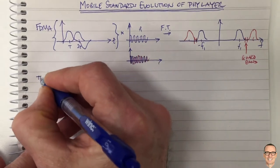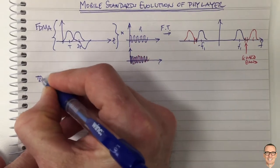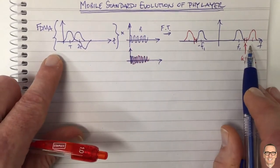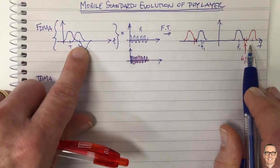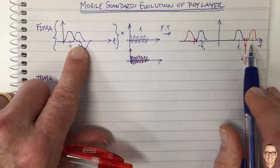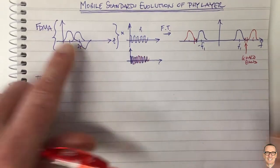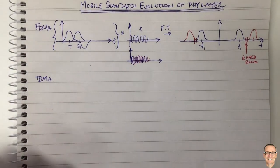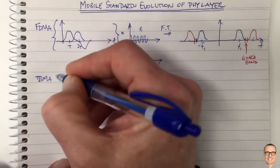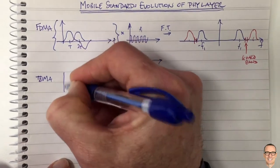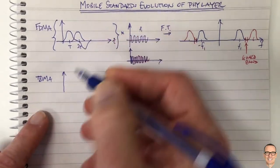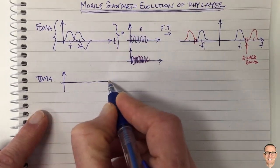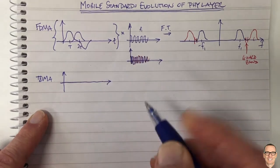How can we be more efficient than FDMA? Some data signals — like a voice conversation — are not transmitting all the time, so we could divide up time and allocate time slots between the different users.